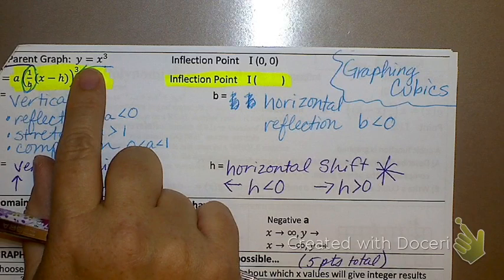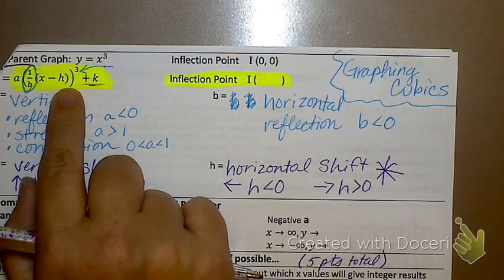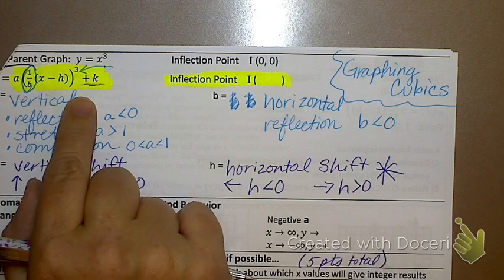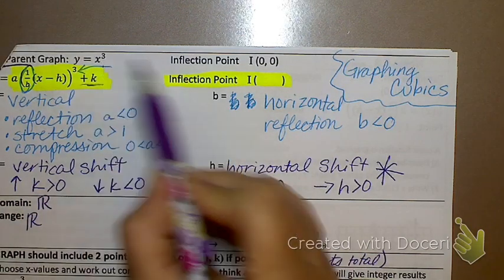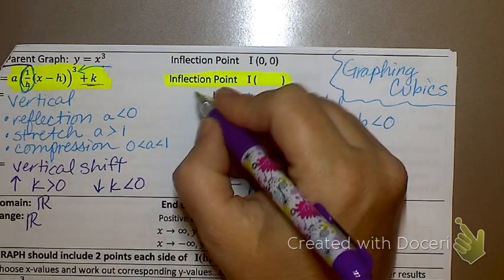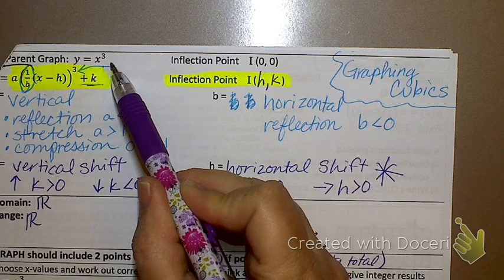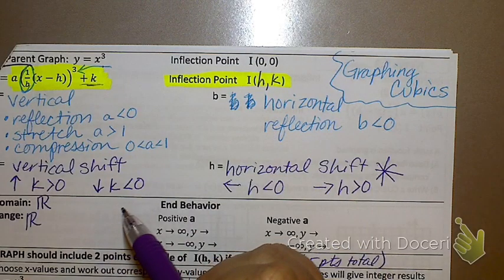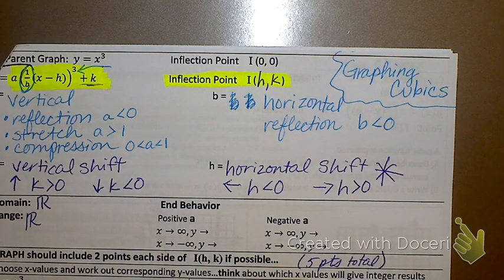The mother function of any graph is the one that has no transformations — no H or K, and A and B are not doing anything. It's the original, the OG. Once you start adding A, B, H, or K, you have some kind of transformation — you have offspring. In the mother function, your inflection point is always (0, 0). The actual definition of the inflection point is always (H, K), and in the mother function, H is zero and K is zero. That's why the inflection point of the mother function is (0, 0).